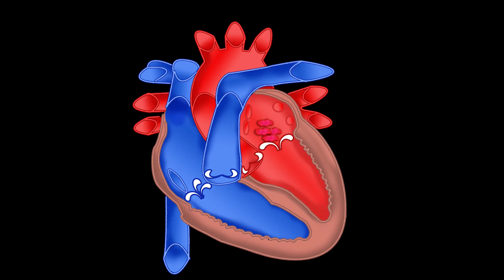As the atrium contracts, blood flows from your left atrium into your left ventricle through the open mitral valve, which is also called the bicuspid valve. When the ventricle is full, the mitral valve — also known as bicuspid, bi meaning two — shuts.